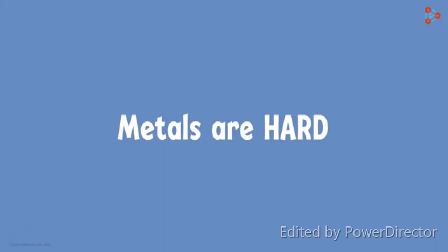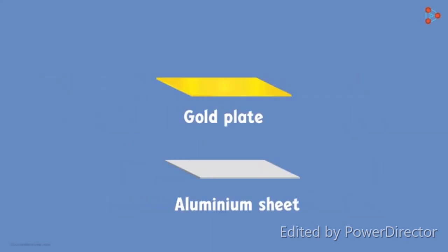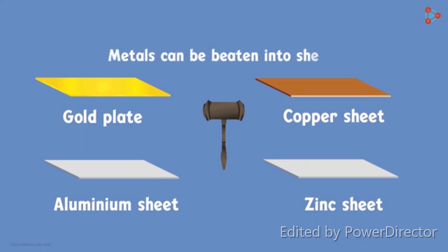How do you think huge aluminium sheets are made or sheets of copper or zinc are made? If I take a hammer and beat them, will they break or they turn into sheets? It is an amazing property of metals to be beaten into sheets, and we call this property malleability of metals. Most metals can be beaten into thin sheets.